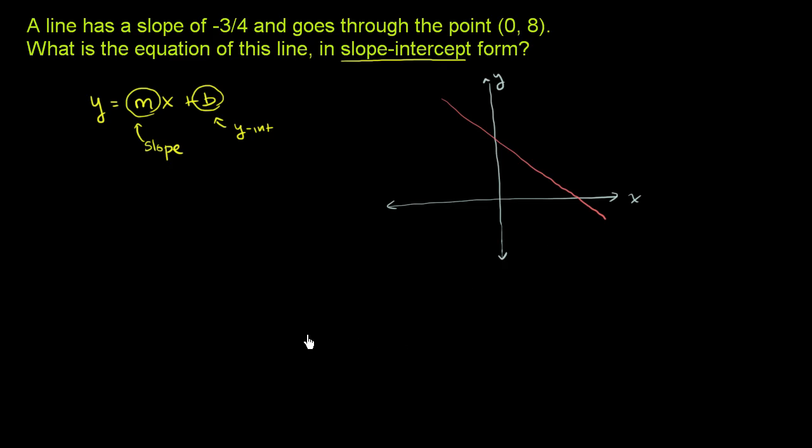So hopefully we're a little familiar with the slope already. The slope essentially tells us, start at some point on the line and go to some other point of the line. Measure how much you had to move in the x-direction. That is your run. And then measure how much you had to move in the y-direction. That is your rise. And our slope is equal to rise over run.